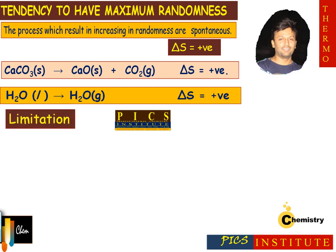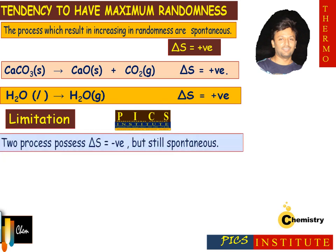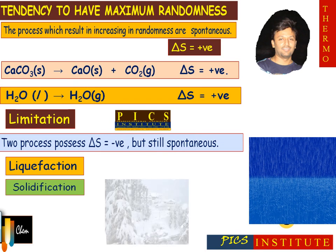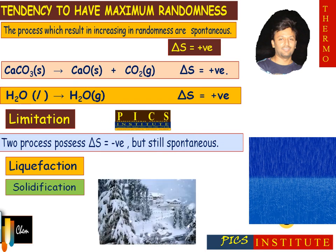There is also a limitation of the randomness driving force. In our nature there are various processes for which ΔS is negative but are still spontaneous. Two main examples: first, liquefaction — in nature for this process ΔS is negative but still the process is spontaneous. Similarly, solidification involves a decrease in entropy but it is still spontaneous.